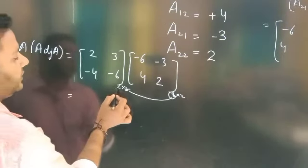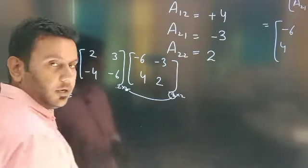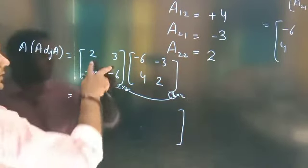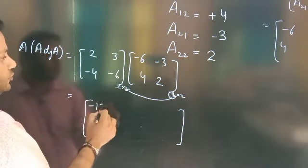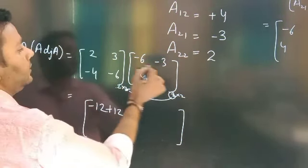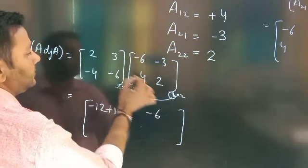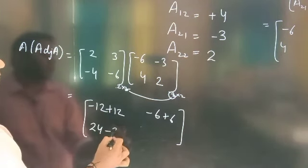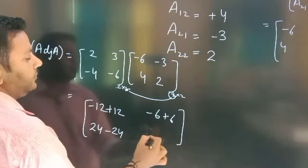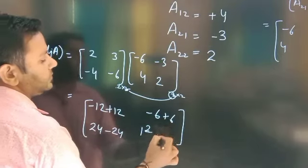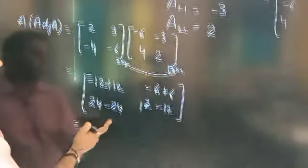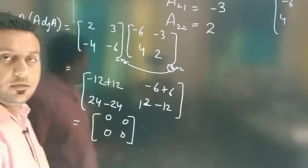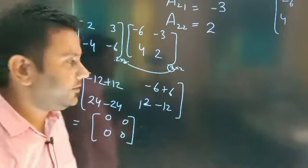Resultant जो आती है वो number of rows in first and number of columns in second matrix — so 2×2 की resultant matrix आएगी। यह superimpose होते ही: minus 12 plus 12, minus 6 plus 6, 24 minus 24, 12 minus 12. Sab cancel out होने के बाद [0, 0; 0, 0], so this is a null matrix।